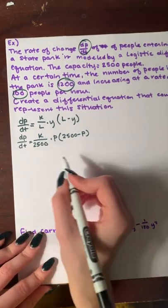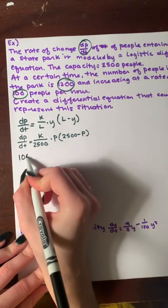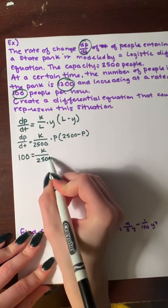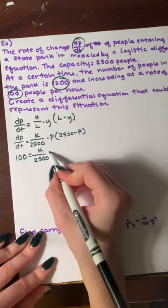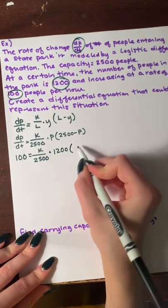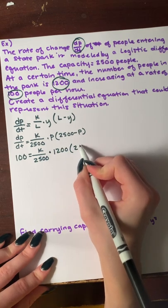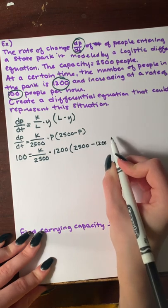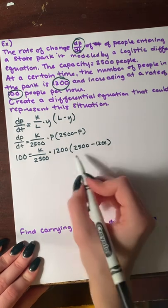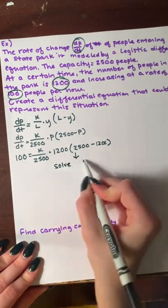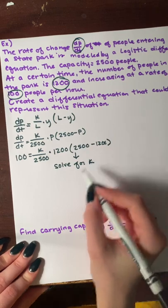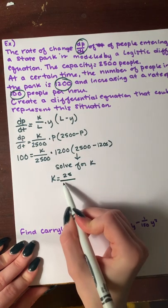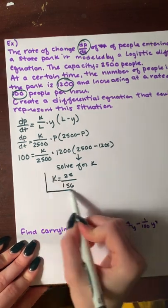So, now we can go ahead and fill that in. We'll have 100 equals K over 2,500, times 1,200, that is then multiplied by 2,500 minus 1,200. From here, we'll then solve for K, which I'm not going to walk through that. But, in the end, we get K equals 25 over 156. And that is our answer for that.